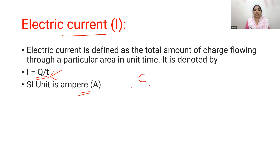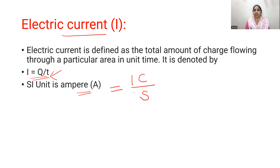The unit of charge is Coulomb and the unit of time is second. 1 Ampere can be defined as the amount of current if 1 Coulomb of charge is flowing through a conductor in 1 second.